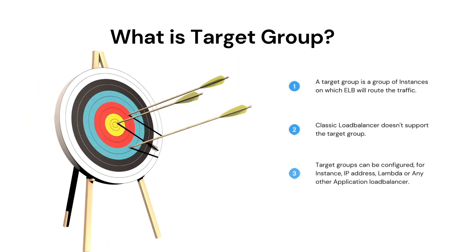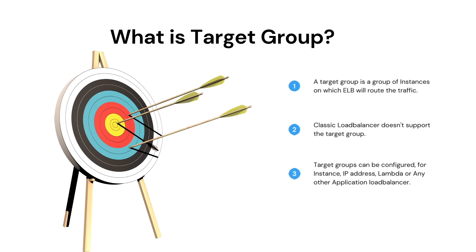Next question: What is a target group? Each target group is used to route requests to one or more registered targets. When you create each listener rule, you specify a target group and conditions. When a rule condition is met, traffic is forwarded to the corresponding target group. You can create different target groups for different types of requests — for example, one target group for general requests and other target groups for requests to the microservices for your application.